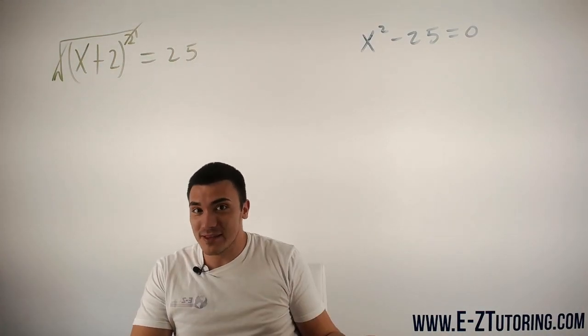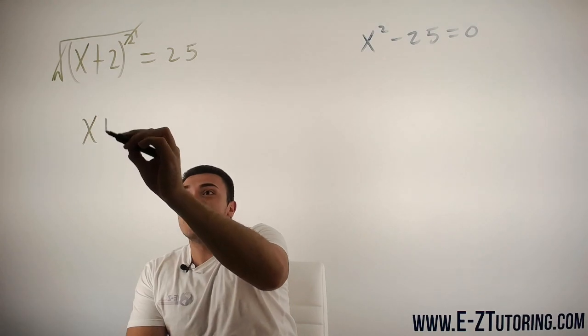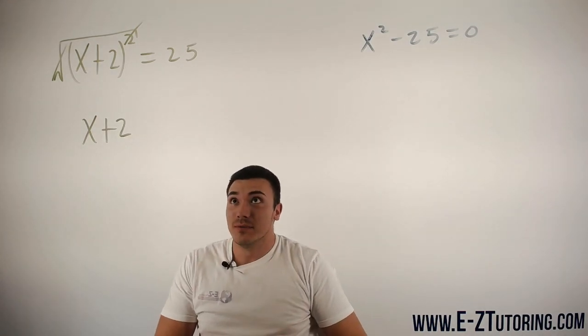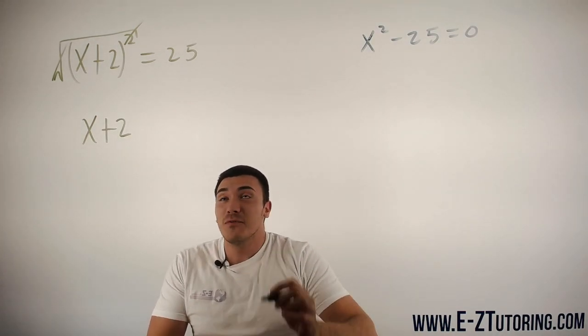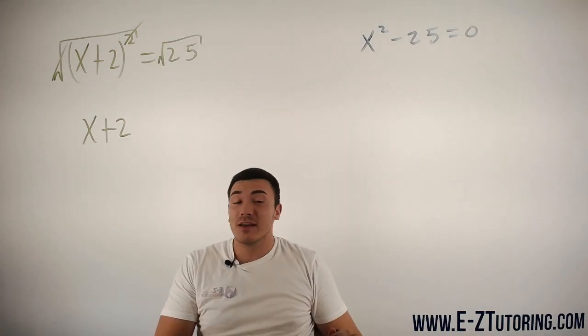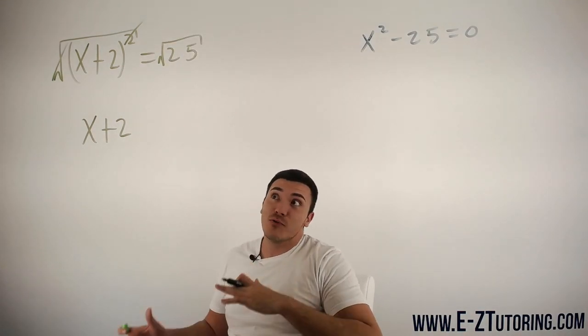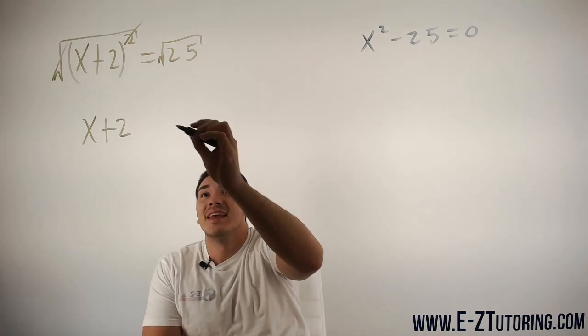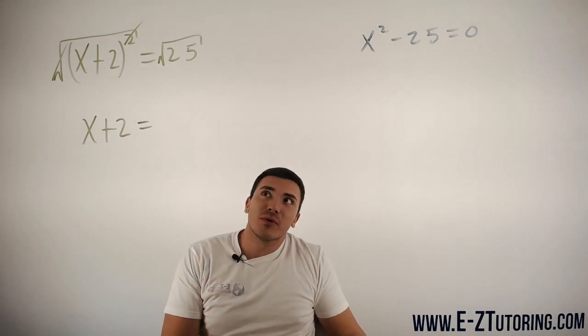They are opposites of each other, and then you're left with just x+2. Now of course, like I said, you want to square root both sides because no matter what you do to the left side you must do to the right side. And what is the square root of 25?